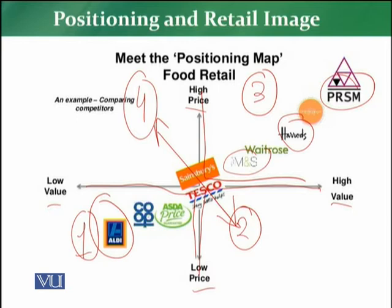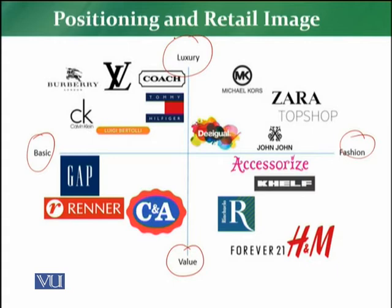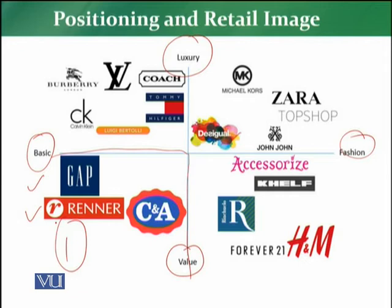In the non-food perspective, especially clothing, we have two parameters: basic and fashion — on one side is basic clothing and on the other side is fashion clothing — and then value for money versus luxury product. In quadrant one, these are the stores selling basic products and giving value to the customer — examples are Gap, C&A, and Renner's. These retailers sell basic products, not fashion products, and they offer value — not luxury — to the customer.